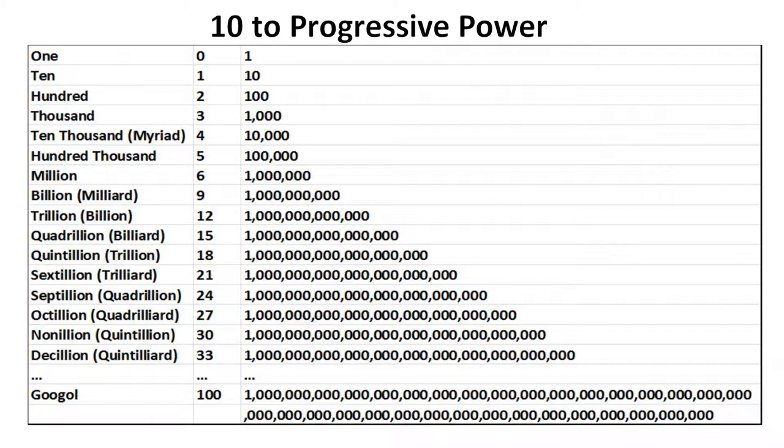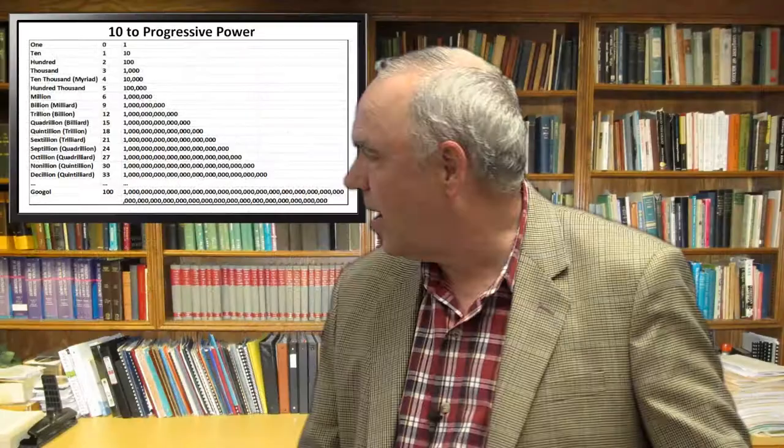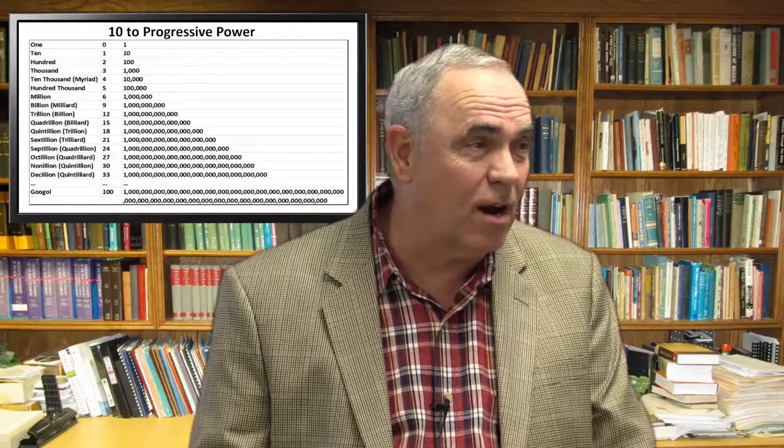10 to the 30th power is called a nonillion. These are numbers we never deal with day to day. The number of atoms in our galaxy is something like 10 to the 69th power. These are just incredibly large numbers.